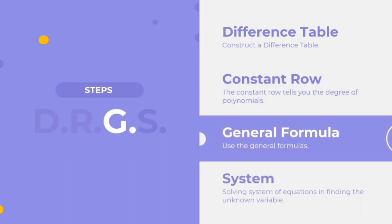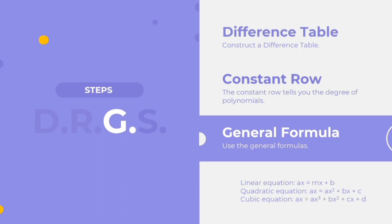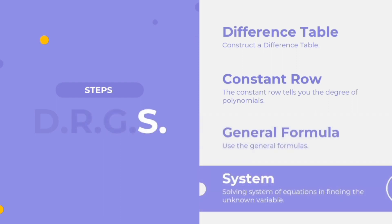The next step is the general formula. For a linear equation, we have a(n) equals mn plus b. For a quadratic equation, we have a(n) equals an squared plus bn plus c. For a cubic equation, we have a(n) equals an cubed plus bn squared plus cn plus d. The next step is solving the system of equations and finding the unknown variables. To further understand this topic, we will be discussing some problems.